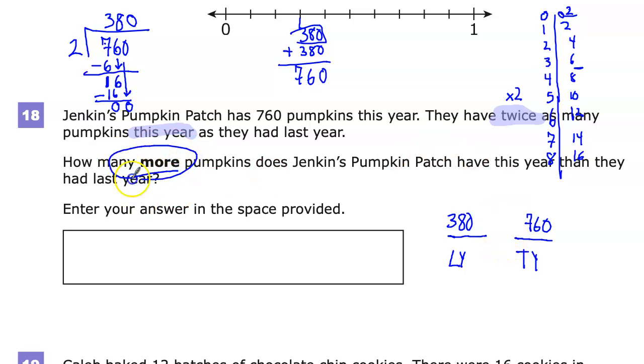I want to know how many more pumpkins they have. So more in this case, since I'm trying to figure out that we have less pumpkins here, if I want to find more, I need to subtract the two to find it. So 760 minus 380.